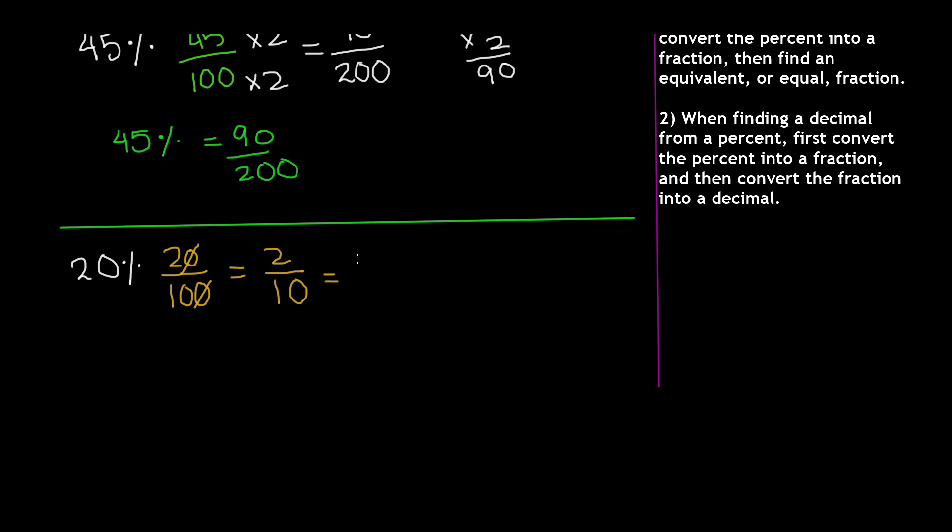And I got 0.2 because if you divide 2 by 10, we know that we cannot divide 2 by 10 because the 2 is smaller than the 10. So you put a decimal point up in the quotient, add a zero.